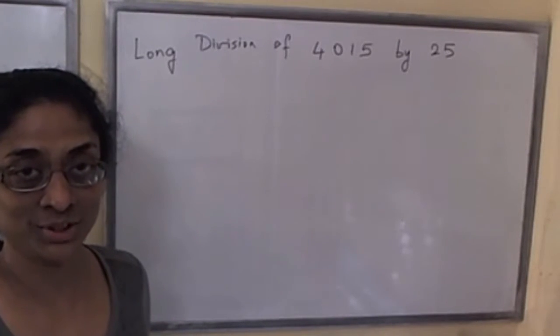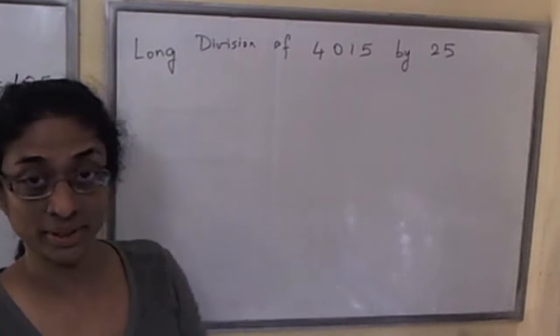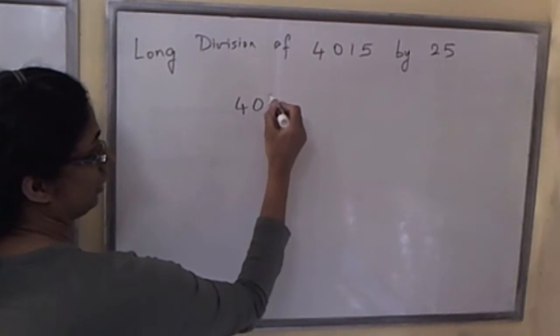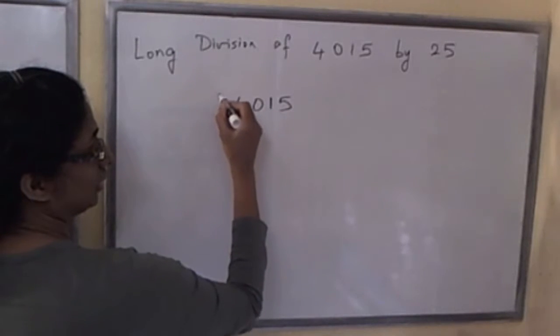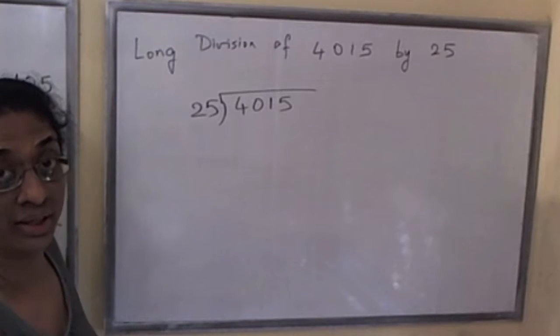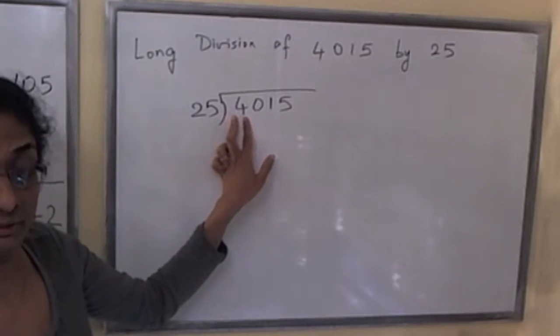Hi, in this video let's perform long division of 4015 by 25. We write the dividend 4015 here and we write the divisor 25 here, and we proceed as follows.